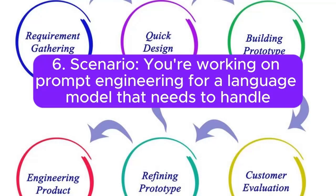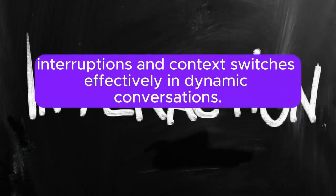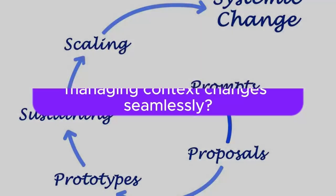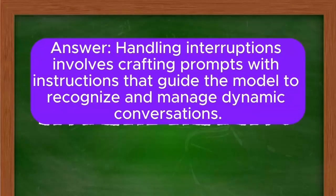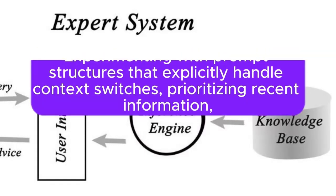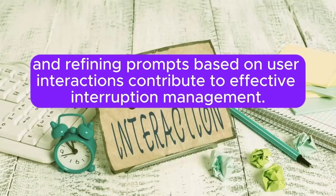Scenario 6: You're working on prompt engineering for a language model that needs to handle interruptions and context switches effectively in dynamic conversations. How would you design prompts to guide the model in recognizing and managing context changes seamlessly? Answer: Handling interruptions involves crafting prompts with instructions that guide the model to recognize and manage dynamic conversations. Experimenting with prompt structures that explicitly handle context switches, prioritizing recent information, and refining prompts based on user interactions contribute to effective interruption management.